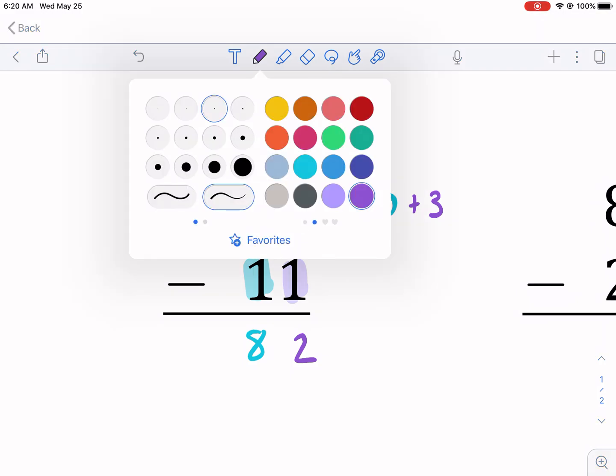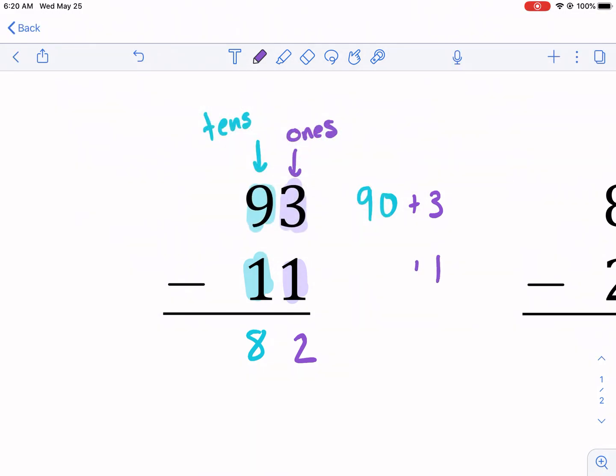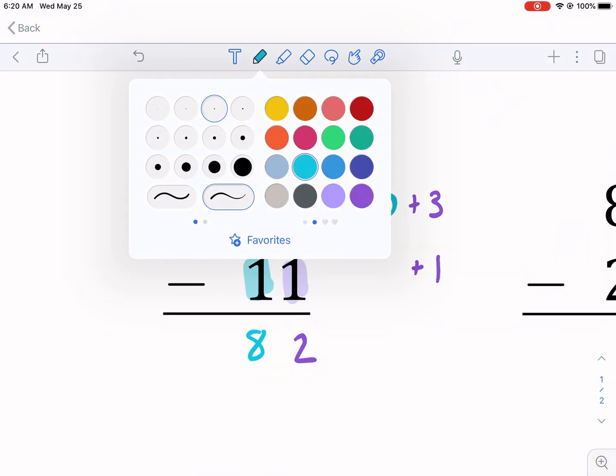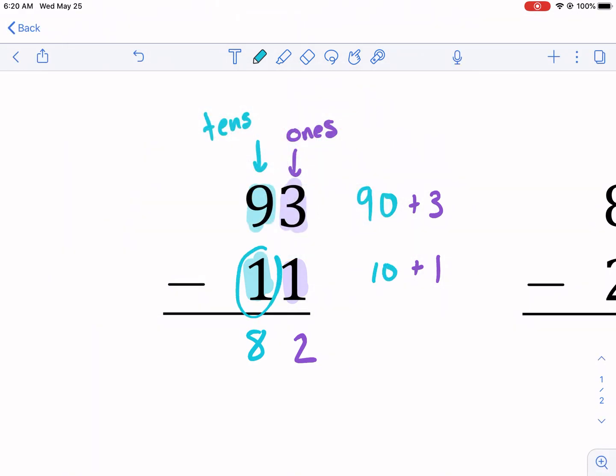11 is essentially the sum, which means adding, of the number 10 plus 1. So when you see this number 1 in this column, it doesn't mean just the number 1. It means the number 10.